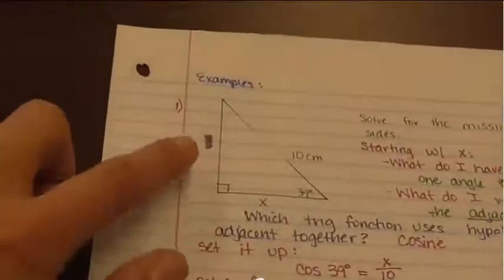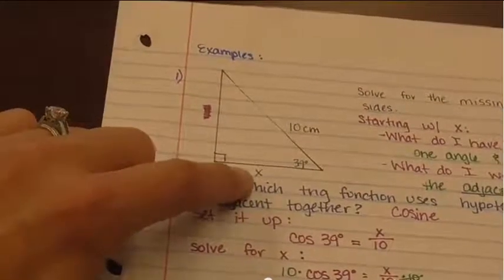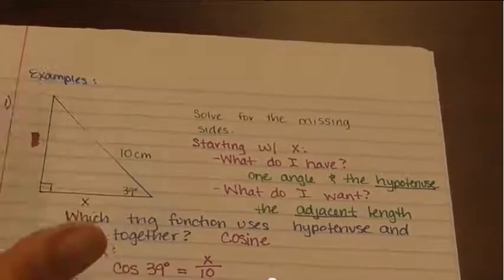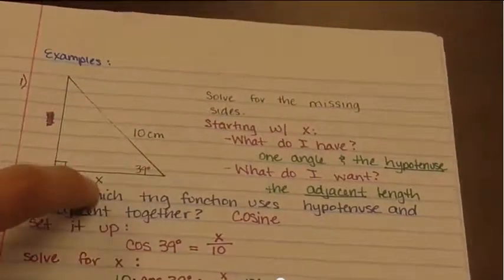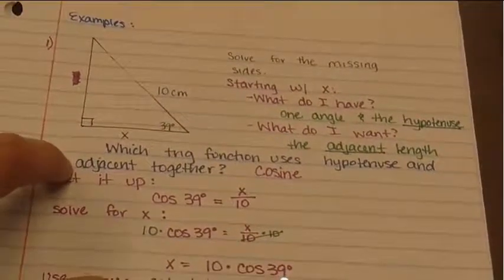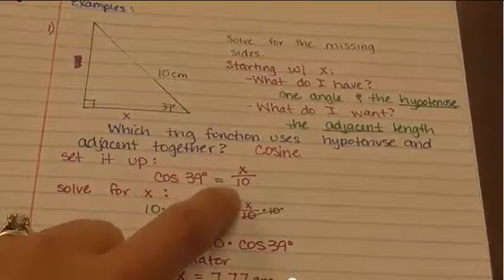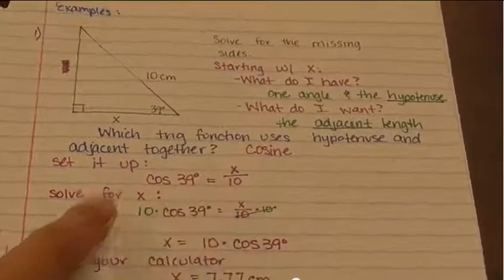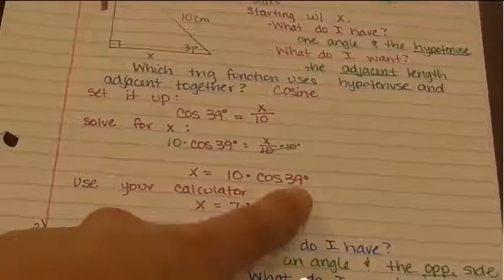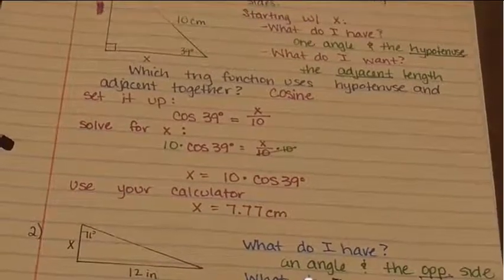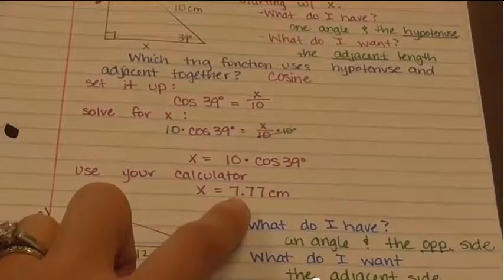In this example, the triangle has a 39-degree angle and a hypotenuse of 10 centimeters, and you need to find the missing leg. What do I have? An angle and the hypotenuse. What do I want? The adjacent side. Cosine uses hypotenuse and adjacent together, so you set up cosine of 39° equals x over 10. To solve for x, multiply both sides by 10: x equals 10 times cosine of 39°. Type that into your calculator and you get 7.77 centimeters.